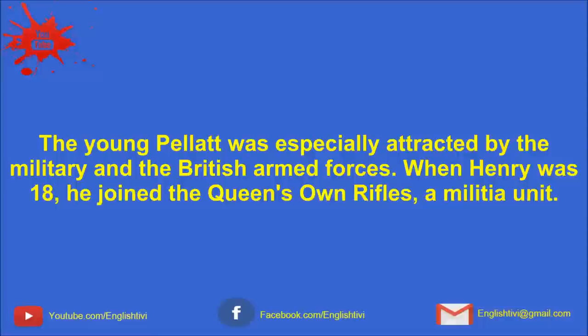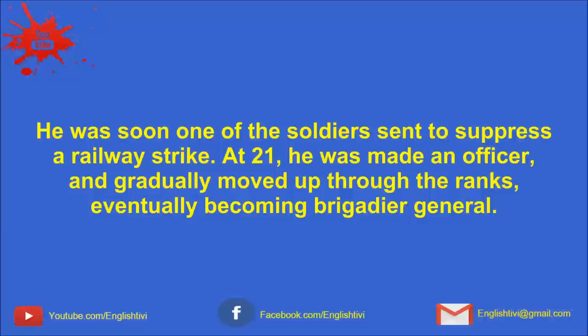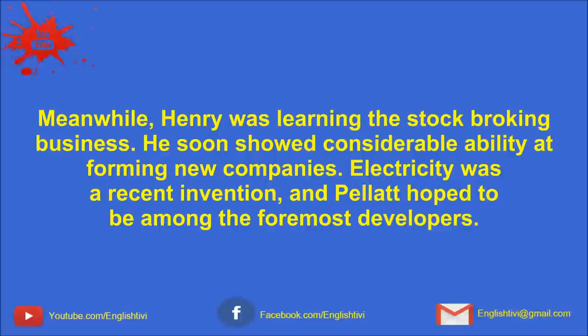The young Pellett was especially attracted by the military and the British Armed Forces. When Henry was 18, he joined the Queen's Own Rifles, a militia unit. He was soon one of the soldiers sent to suppress a railway strike. At 21, he was made an officer and gradually moved up through the ranks, eventually becoming a brigadier general. Meanwhile, Henry was learning the stock brokerage business. He soon showed considerable ability at forming new companies.